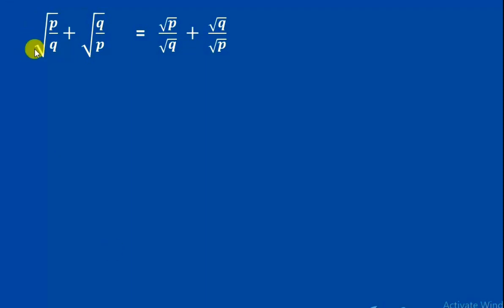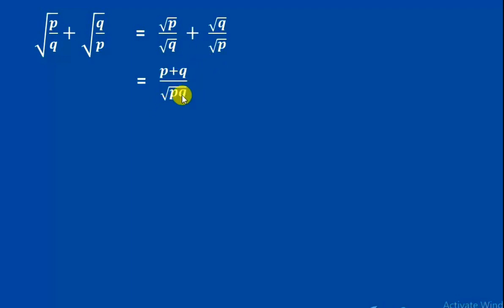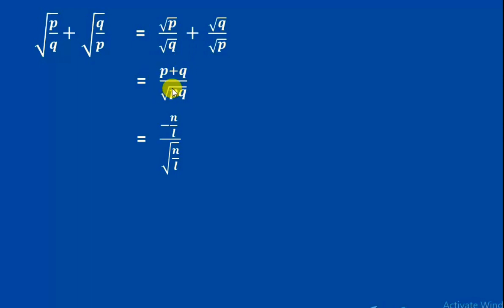Now, consider √(p/q) + √(q/p). This equals √p/√q + √q/√p. Combining, this gives (p + q) divided by √(pq), using the sum of roots p + q and the square root of the product of roots pq.